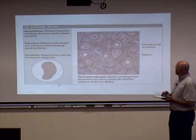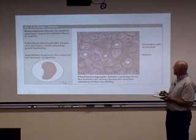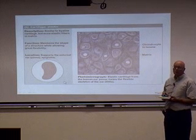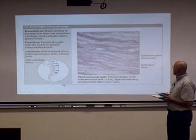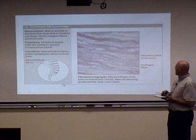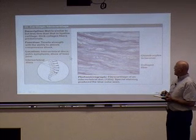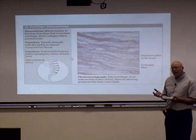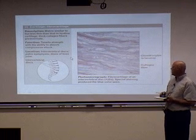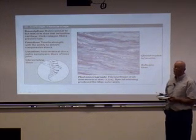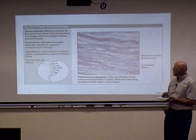Here is elastic cartilage — the classic example is the external ear. It has a lot of elasticity, allowing maintenance of shape while still being flexible. And then fibrocartilage has a lot of collagen fibers and less matrix, giving it strength and the ability to absorb shock and resist compression. A classic example is the intervertebral disc between vertebrae, which acts as a shock absorber.